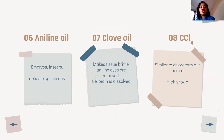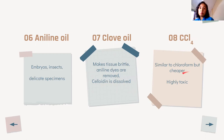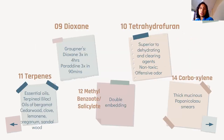Aniline oil is for delicate specimens like embryos and insects. Clove oil makes the tissue brittle, can remove aniline dyes, and is not good for celloidin. Carbon tetrachloride is similar to chloroform but cheaper and highly toxic, sharing similar advantages and disadvantages with chloroform.